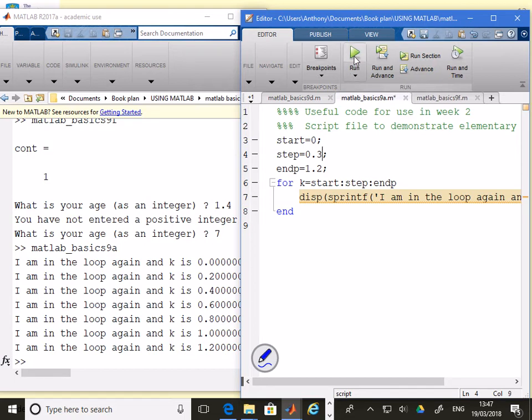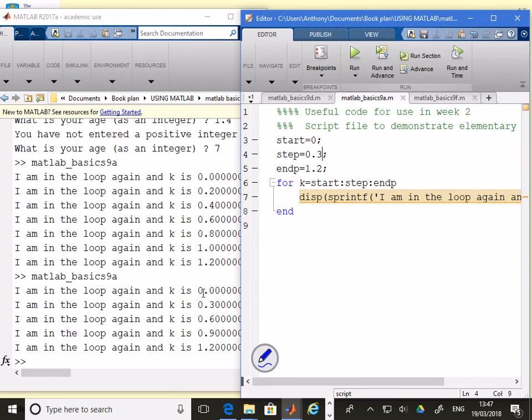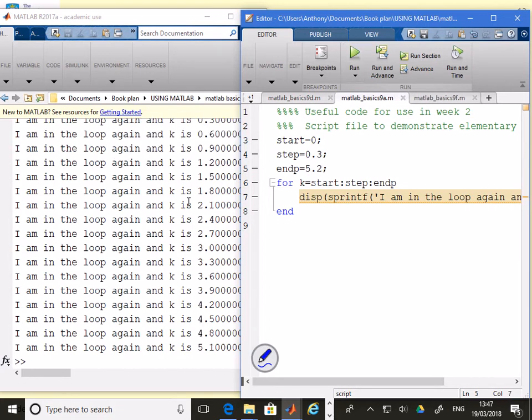If I now run it, what do you see? I get 0, 0.3, 0.6, 0.9, 1.2. I could change that end to be something like 5.2. Run it again. And now you see it's got all these different values from 0 up to 5.1.